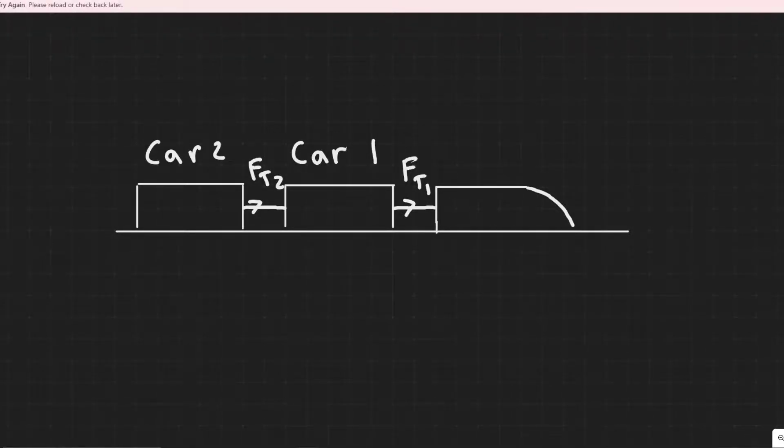In this problem we're told a train locomotive is pulling two cars of the same mass behind it. Determine the ratio of the tension in the coupling, think of it as a cord, between the locomotive and the first car, to that between the first car and the second car, for any non-zero acceleration of the train.